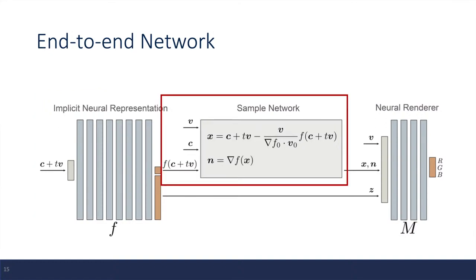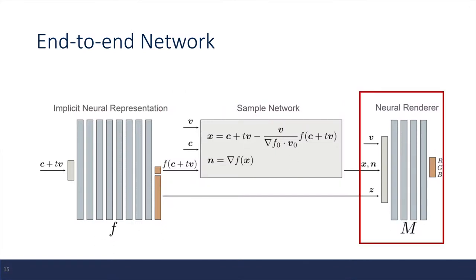The second component is the sample network. So for a given pixel, it will calculate the intersection point and the surface normal. And the last component is the neural renderer, so it will output the estimated RGB color.